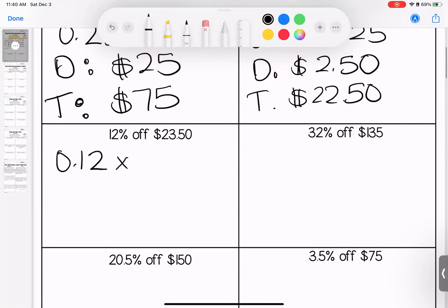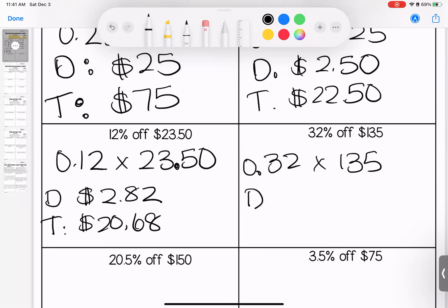12% as a decimal is 0.12, multiplying that by $23.50. Make sure you're putting both decimals in if you're using a calculator. When we multiply these, my discount is $2.82. When I subtract that, my total that I'm still paying is $20.68. For 32% of $135, my discount is $43.20. The total I still need to pay is $91.80.